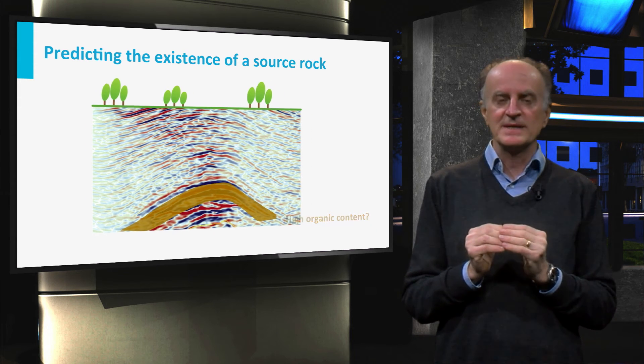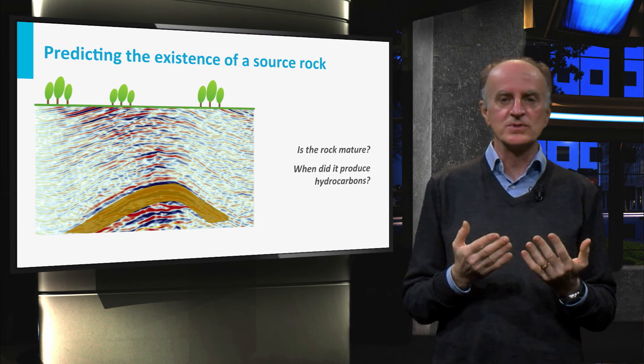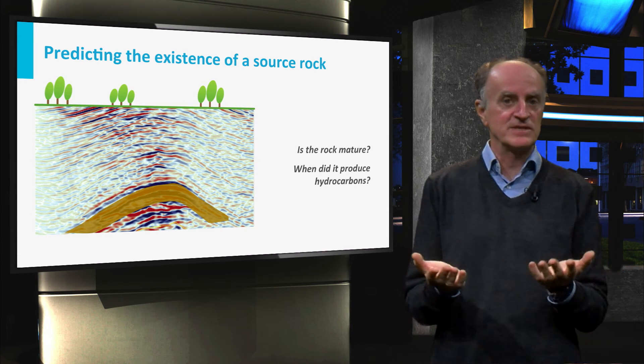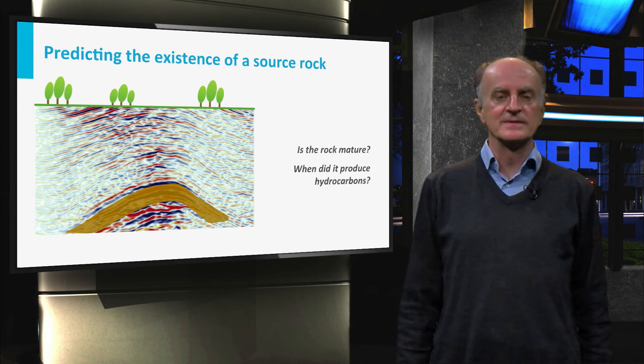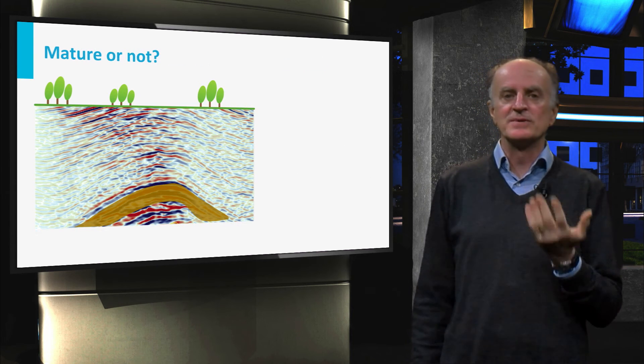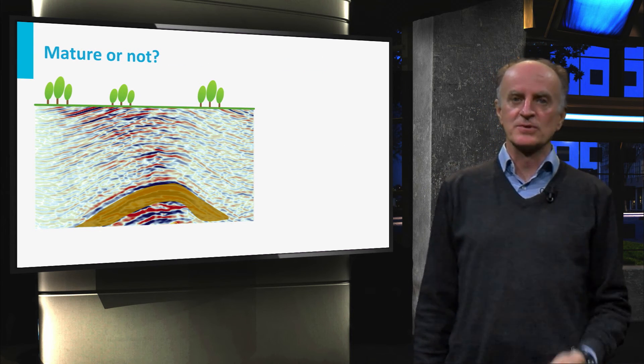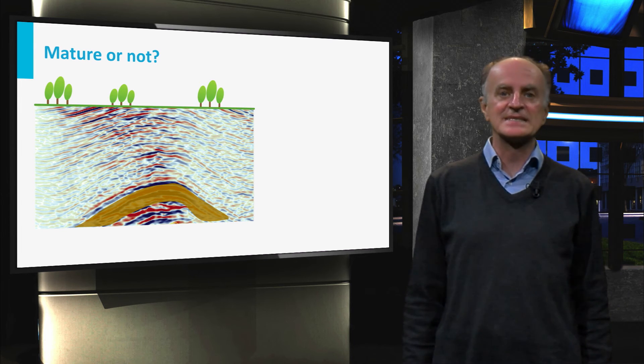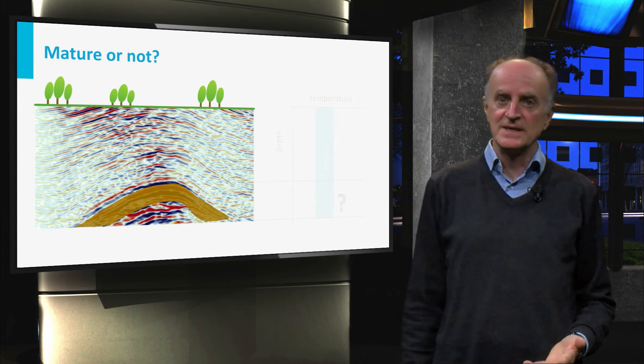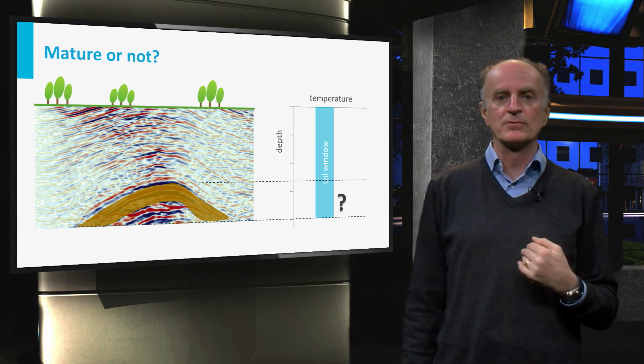The second step is to predict its thermal evolution. How mature is the rock? If at all, when did it produce hydrocarbons? To predict the degree of maturity of the potential source rock, you will have to estimate its temperature. To do this, you need to predict the geothermal gradient.